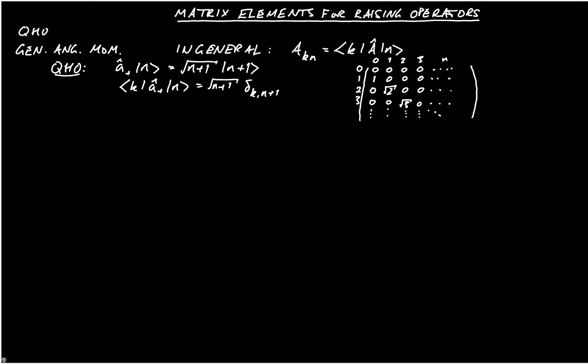So for the quantum harmonic oscillator, it's a reasonably simple way to prepare the matrix for A+. If you want to make A-, you can follow the same procedure, or you can just take the Hermitian conjugate of the matrix. Now what about generalized angular momentum?